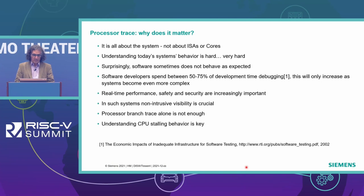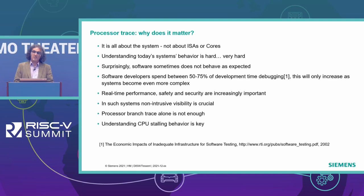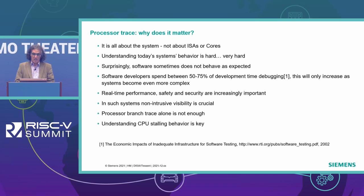So why does trace matter? Trace matters because it's all about the system — not just an ISA or performance of a specific core. With modern SOCs having multiple cores, it is crucial for firmware developers and system designers to understand system behavior, and that's not an easy task. Software sometimes doesn't behave the way we expect, and software developers tend to spend between 50 and 75 percent of their time debugging. With increasing numbers of cores and more interactions between them, we expect this percentage will only increase. The requirements for real-time performance, safety, and security are increasing, making this debug challenge even harder.